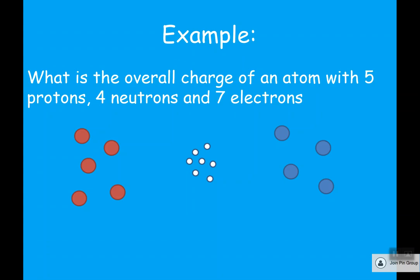Let's go into a bit more detail about charge. Say we've got five protons, four neutrons, and seven electrons. We can work out the overall charge like this: five protons each have a charge of plus one, so overall that's plus five. Seven electrons each have a charge of minus one, so that's minus seven. Four neutrons have no charge. The overall charge is plus five minus seven plus zero, which equals minus two.